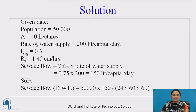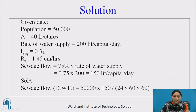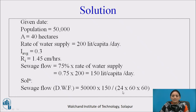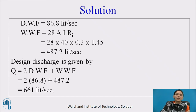Given data: population = 50,000; area = 40 hectares; rate of water supply = 200 liters per capita per day; impermeability factor I = 0.3; RI = 1.45 cm/hour. Sewage flow = 75% of water supply = 75% of 200 = 150 liters per capita per day. Dry weather flow for 50,000 population = (50,000 × 150) / (24 × 60 × 60) = 86.8 liters per second.